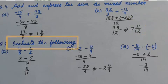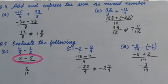Question number 5. Evaluate the following. Part a: 4 upon 5 minus 1 upon 2. Yes, LCM of 5 and 2 is 10. And then numerators will be 8 minus 5. Answer is 3 upon 10.